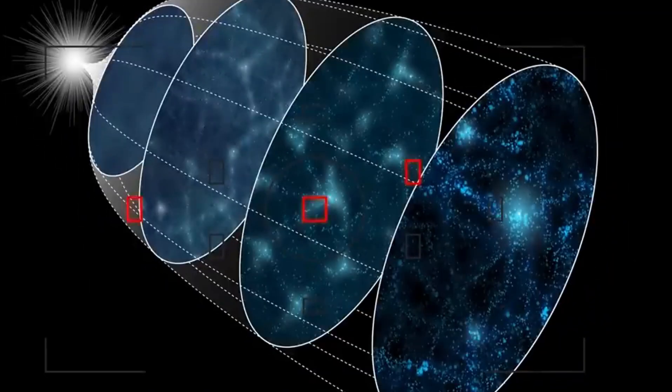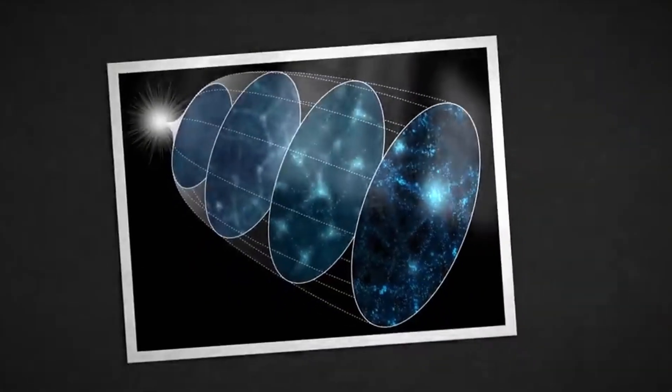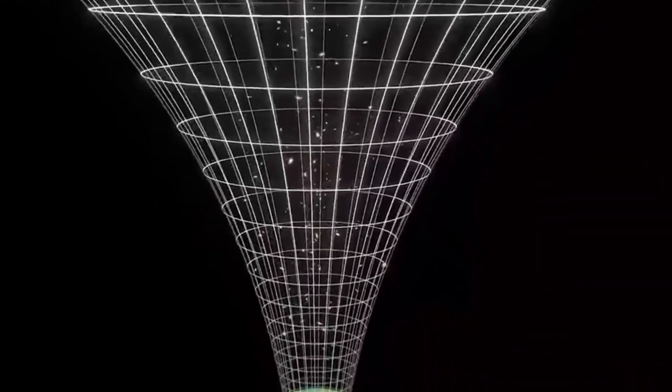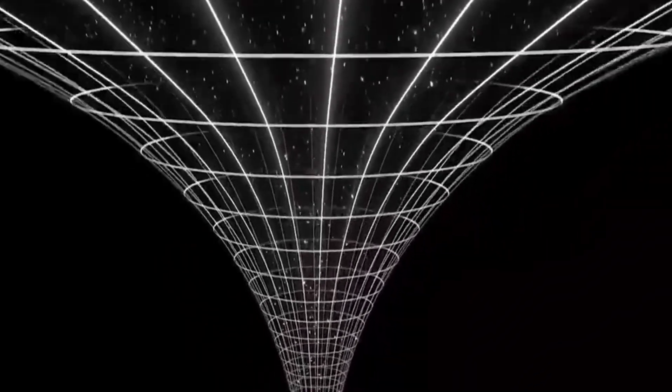Leja also said that before astronomers start rewriting cosmology theories to explain how these galaxies came together so quickly after the Big Bang, they will have to ensure the odd red dots they are looking at are not something else.